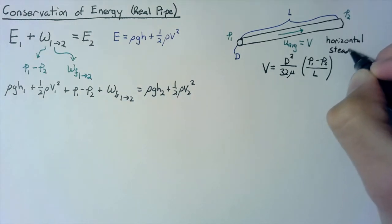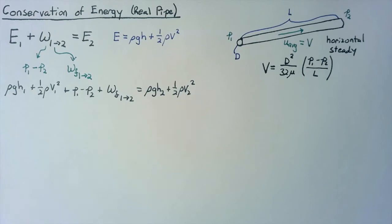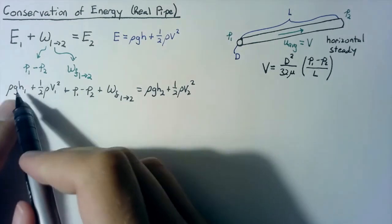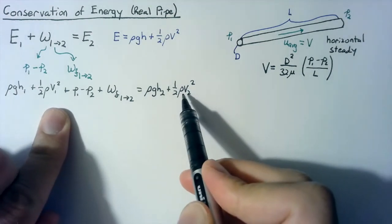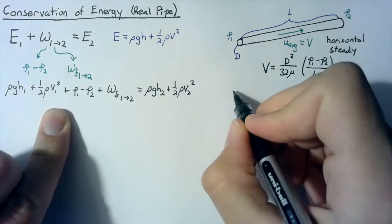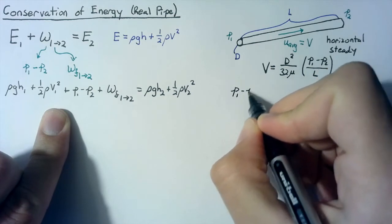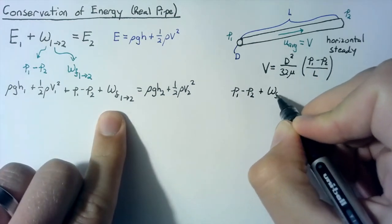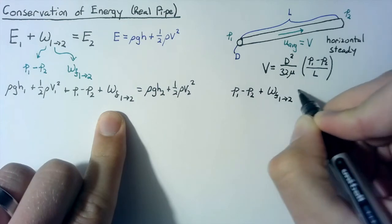Second, let's say that this is steady, so that our velocities are going to be the same at each of the states. If we do that, we can get rid of the potential energies that will cancel out, as will the kinetic energies. And we'll be left with just P1 minus P2 plus this work done by friction from state one to two is equal to zero.